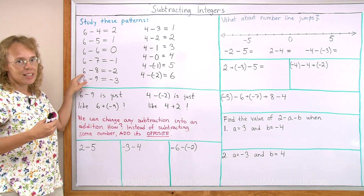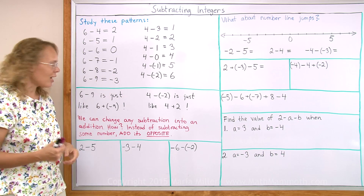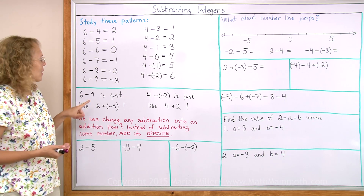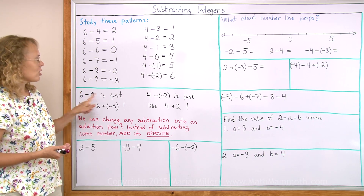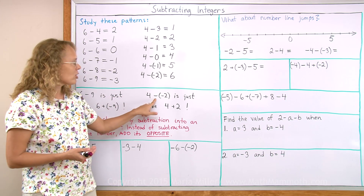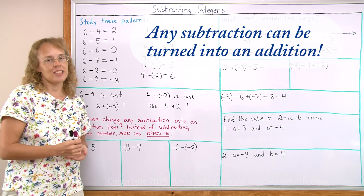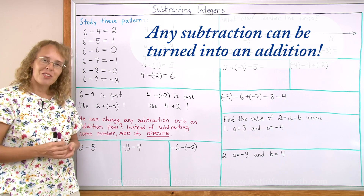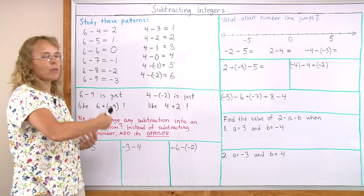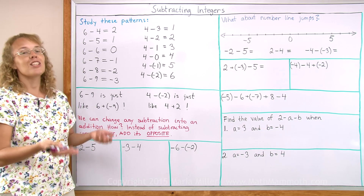6 positives and 8 negatives, so we will have two negatives as a result. In other words, any subtraction — whether it is a subtraction of a positive number or subtraction of a negative number — can be turned or changed into an addition instead. And you already know how to add integers, so that reduces the problem of subtraction into a problem of addition, which you already know how to do.